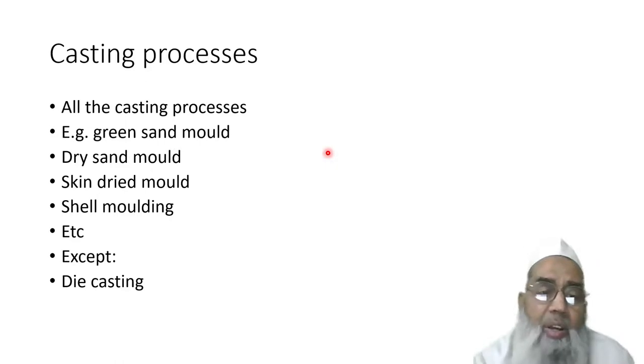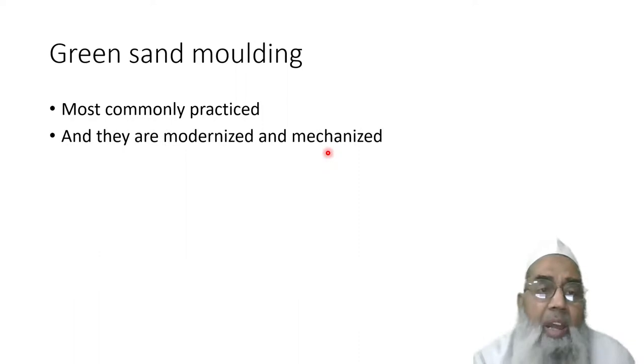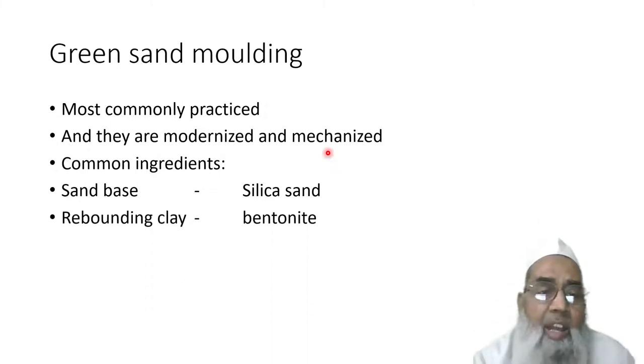Plastic molding is not being used. As far as green sand molding is concerned, it is mostly practiced and they are modernized and mechanized. Common ingredients of green sand molds are: base sand is silica sand and rebounding clay is bentonite.